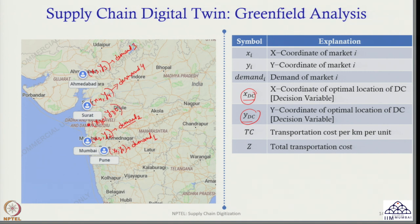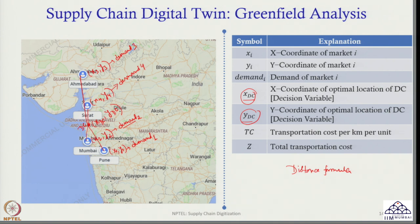If the DC is located at some point, I need to find out the distance from that DC to Surat, to Ahmedabad, to Mumbai, and to Pune. So first I need a distance formula to find the distance from the DC to various locations. This is a representative location — the exact location will be determined by the optimization algorithm. Once a location is assumed, I can compute the distance to each demand point.